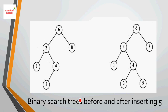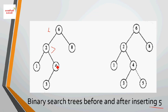Now, in binary search tree insertion: if we insert value 5, the root value is 6, and 5 is less than 6, so 5 goes to the left. This satisfies the binary search tree condition.